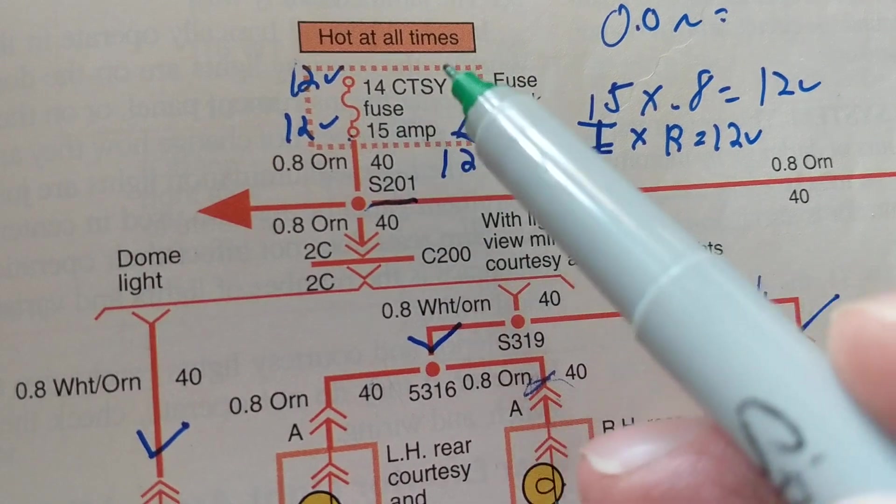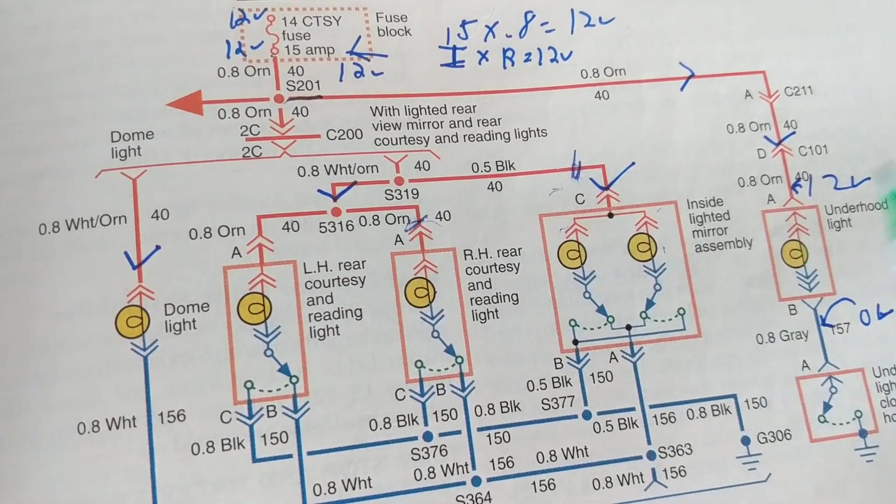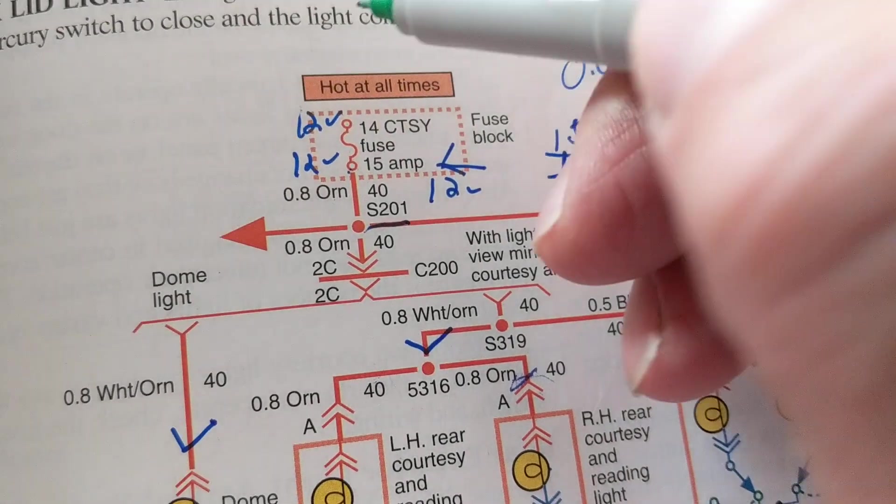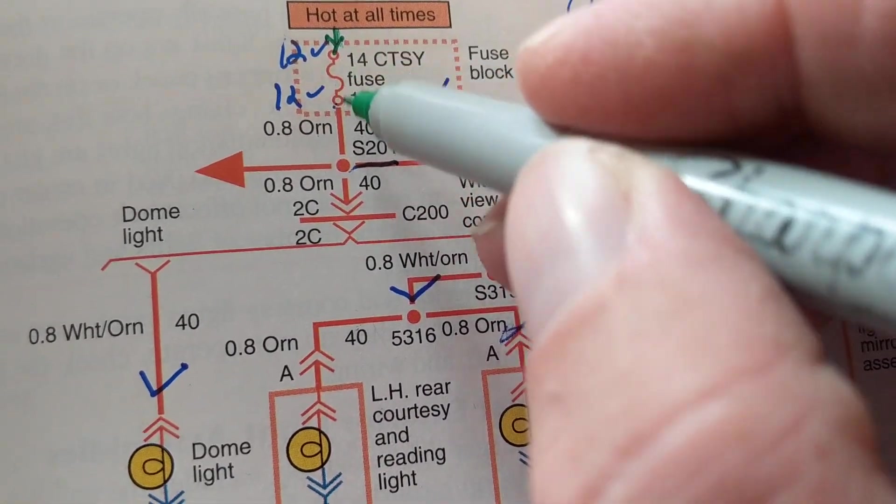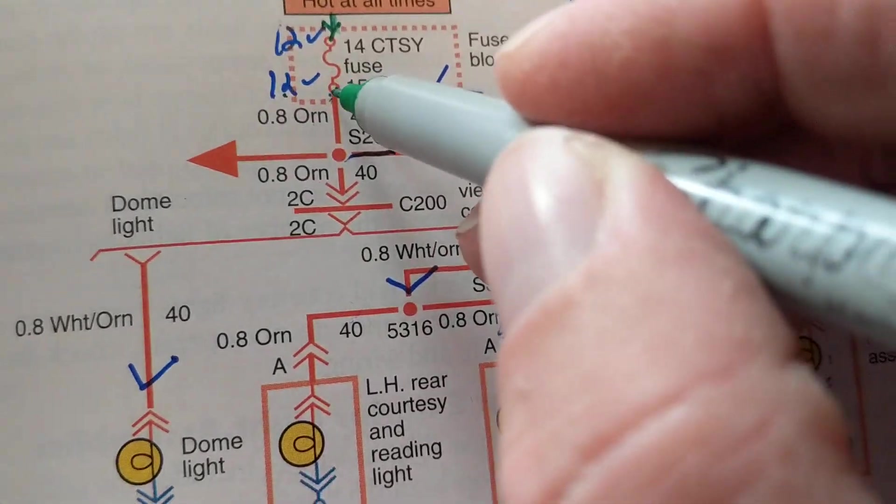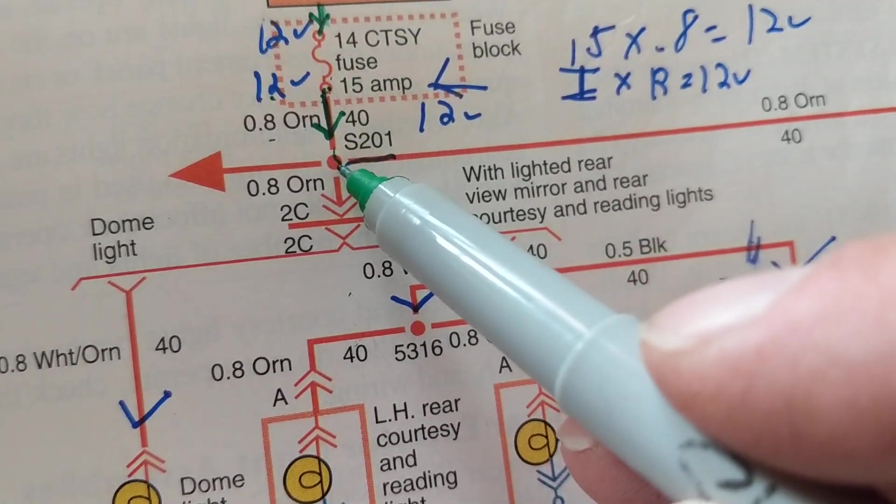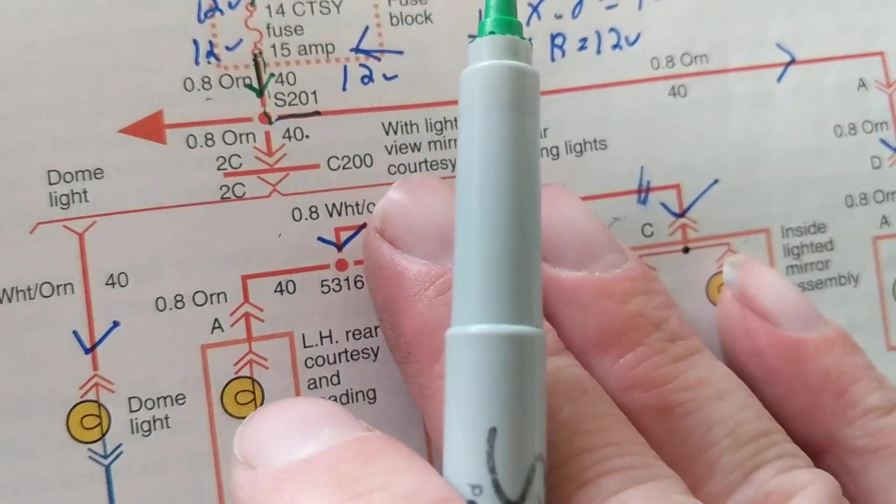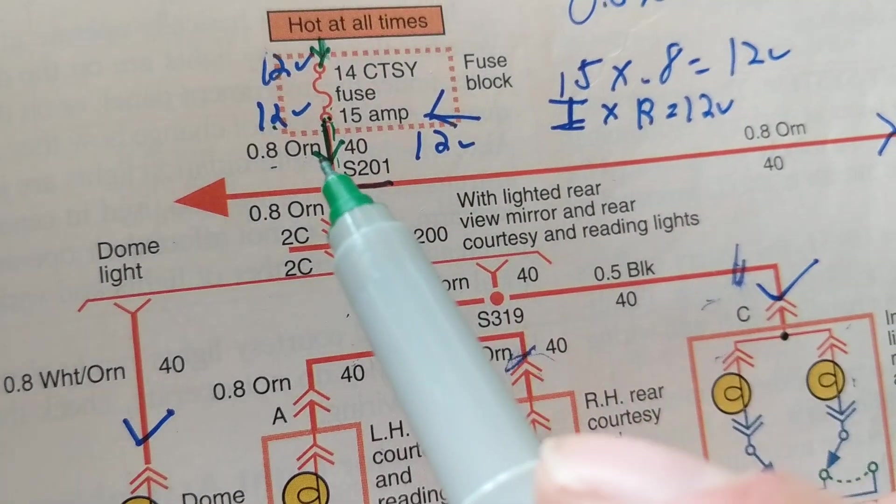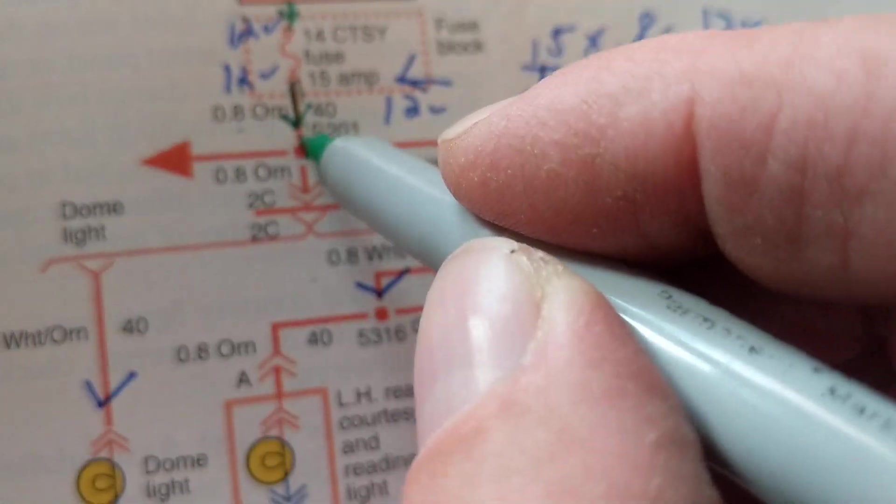If our problem is with the hood light, do we worry about the dome light? No. We don't worry about these things. We come to this. Now the question is how does this connect to this? Hot at all times. Here it is. You don't need that switch that says for low or high beam. You don't need any switch. It does it automatically. We start over here hot at all times. That means it's always connected to the battery. We start with a fuse.